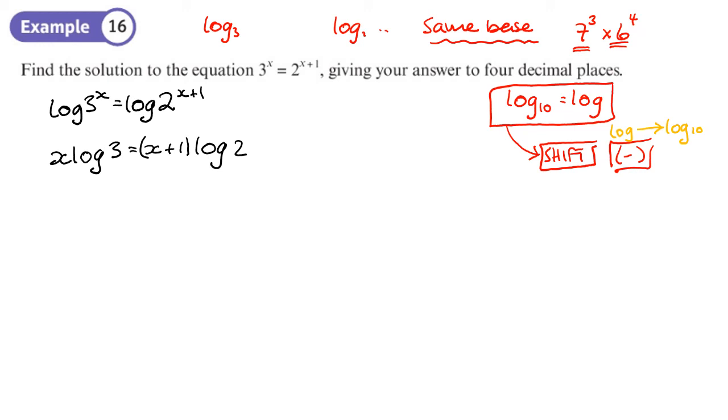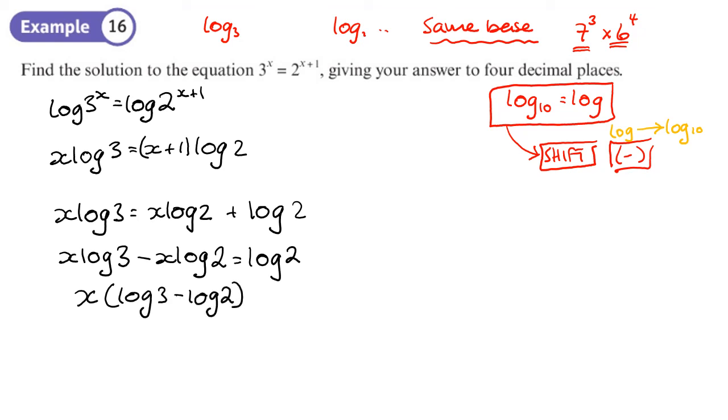Then I'll bring the x's to one side and the logs to the other. Actually scrub that. That's not going to work. Let's expand the brackets. That's a better idea. So x log 2 plus log 2. So these are still to the base 10. I'm doing it this way. Then I can get the x's together and factorize it. So I've got x log 3 minus x log 2 equals log 2. So now I can factorize it. x times log 3 minus log 2 equals log 2.